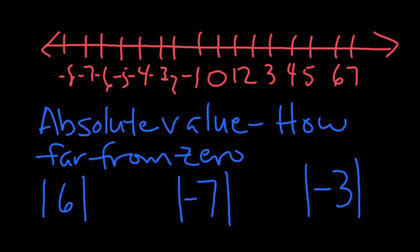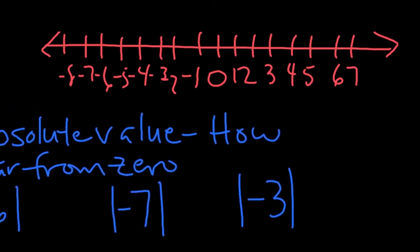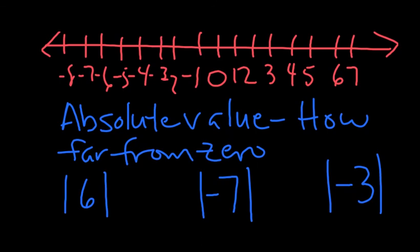Okay, absolute value. Now when you see a number with lines on each side like this, see those lines? Line, line, 6. That always means absolute value. See? Line, line, negative 7. Line, line, negative 3. Those lines mean take the absolute value of this number.